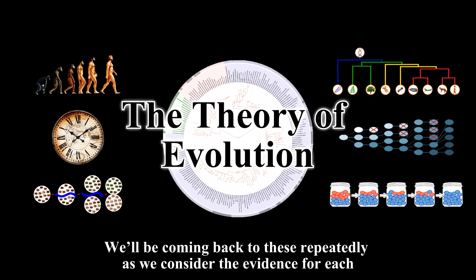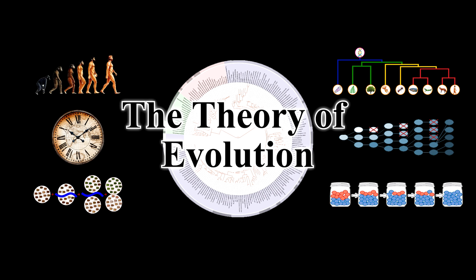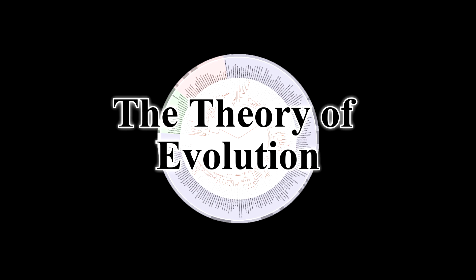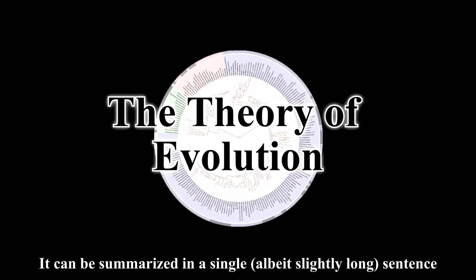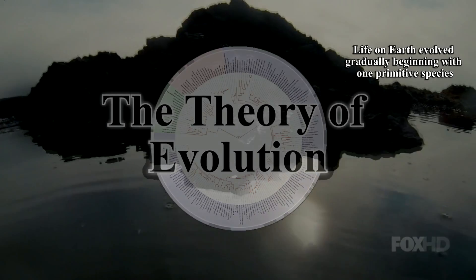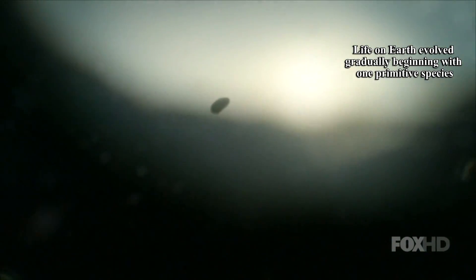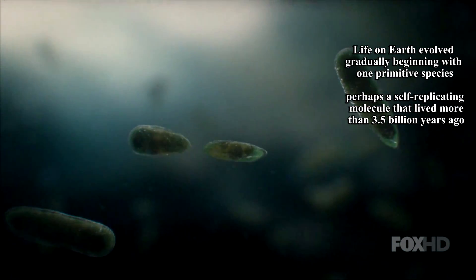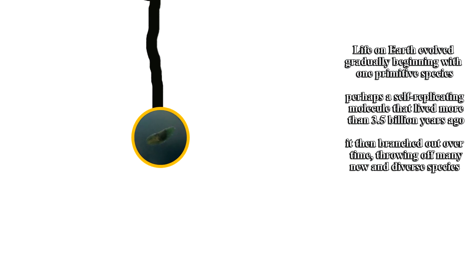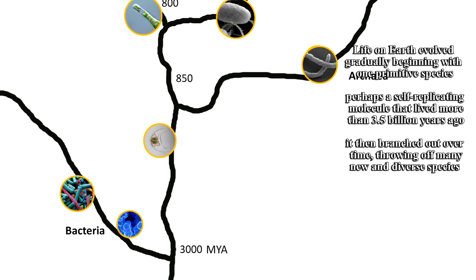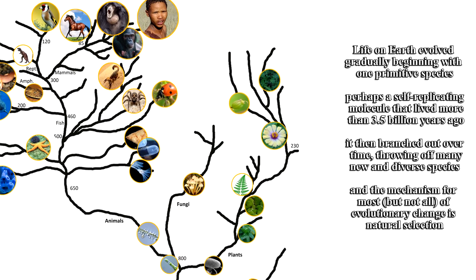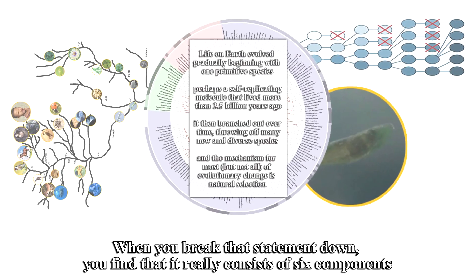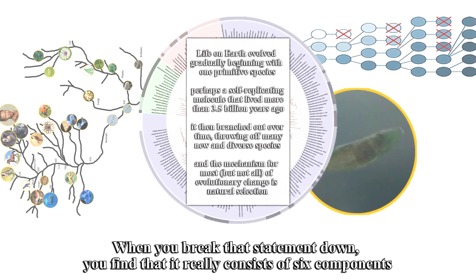We'll be coming back to these repeatedly as we consider the evidence for each. In essence, the modern theory of evolution is easy to grasp. It can be summarized in a single, albeit slightly long, sentence. Life on Earth evolved gradually, beginning with one primitive species, perhaps a self-replicating molecule that lived more than 3.5 billion years ago. It then branched out over time, throwing off many new and diverse species. And the mechanism for most, but not all, of evolutionary change is natural selection. When you break that statement down, you find that it really consists of six components.